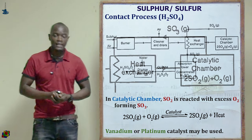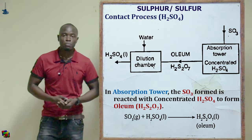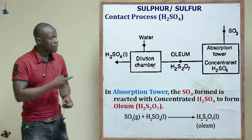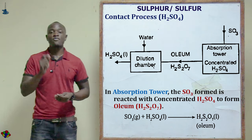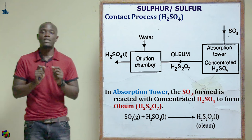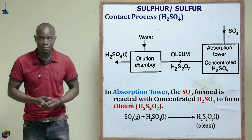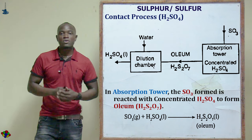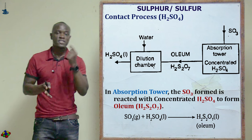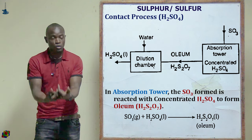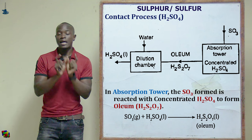After the catalytic chamber we go to the absorption chamber, where sulfur trioxide (SO₃) is reacted with concentrated sulfuric acid to form what is referred to as oleum. SO₃ is not allowed to dissolve directly with water, even though dissolving SO₃ with water could give concentrated sulfuric acid.